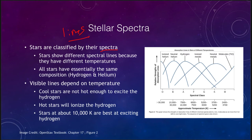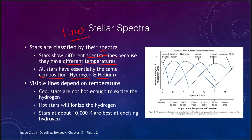The reason that stars show different spectral lines has nothing to do with their composition. Their compositions are all essentially the same — they are primarily hydrogen and helium. What we will see is that all stars are made primarily of hydrogen and helium, but the differences in spectral lines have to do with the stars' temperatures. The lines that are visible do depend on temperature.